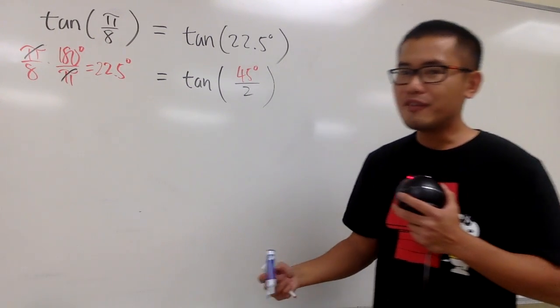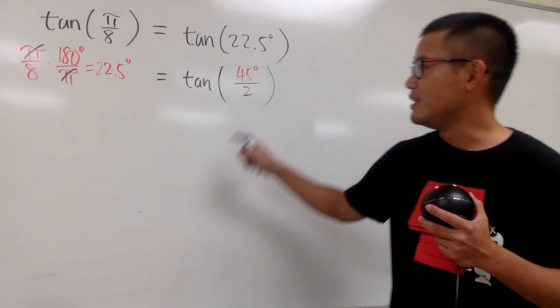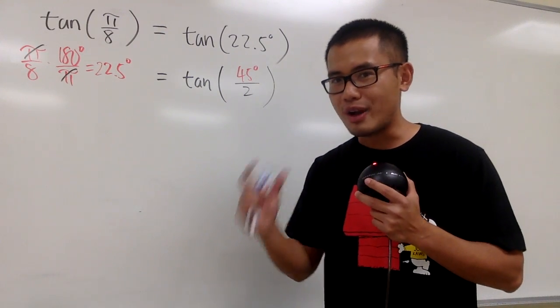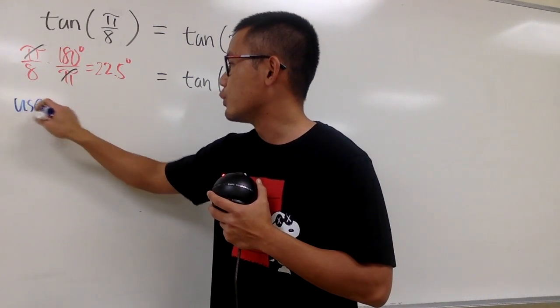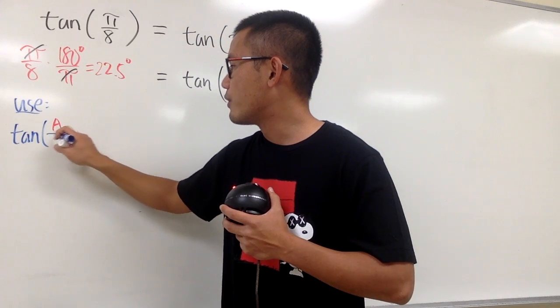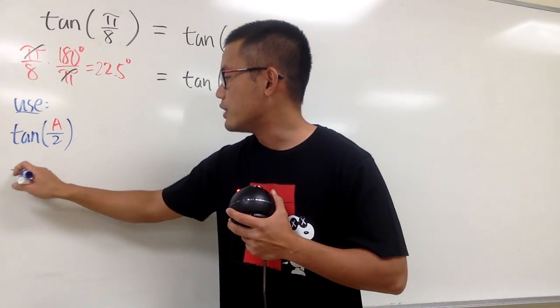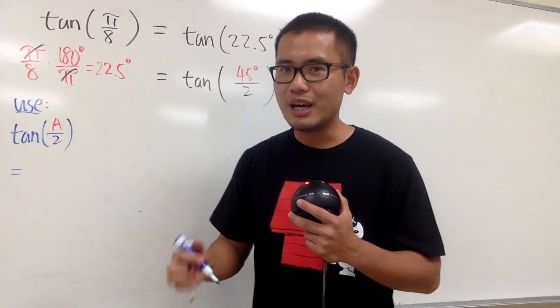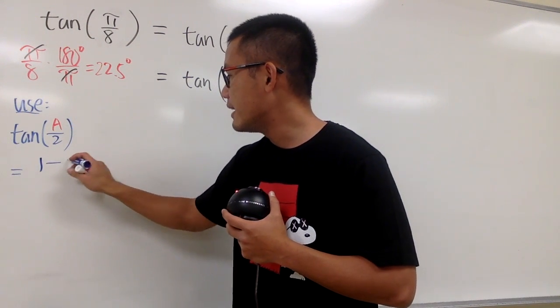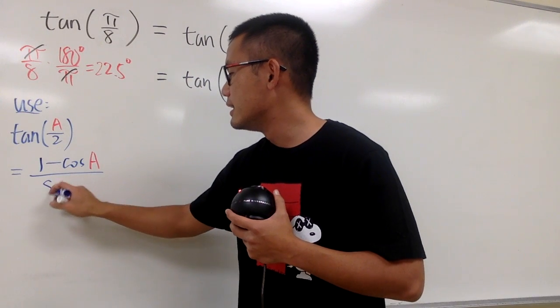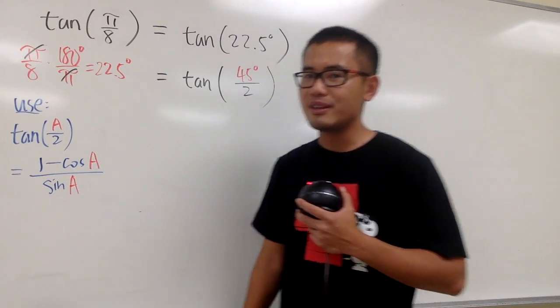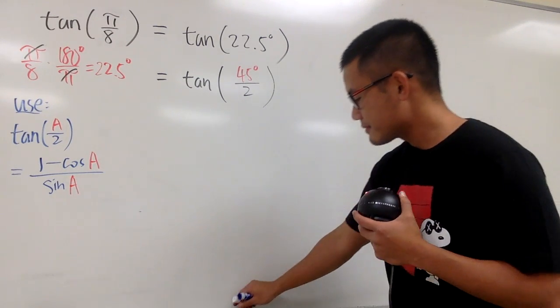However, we have a total of three versions of the half-angle formula for tangent. The one we should always use, in my opinion, is the one with just one term in the denominator. Tangent of A over 2 equals (1 - cos A) over sin A. As you can see, we only have sine A in the denominator. It's easier this way.